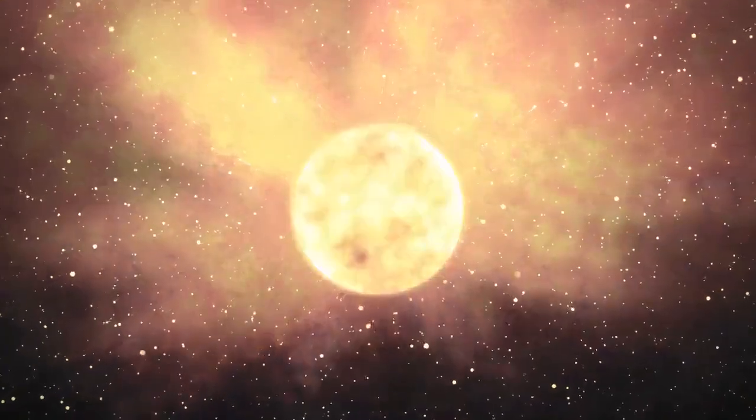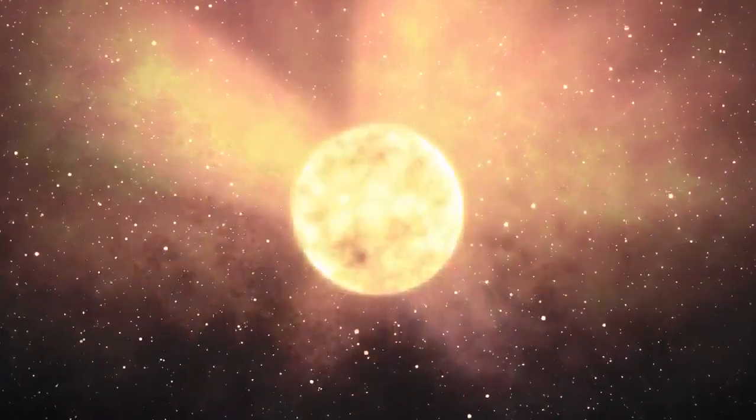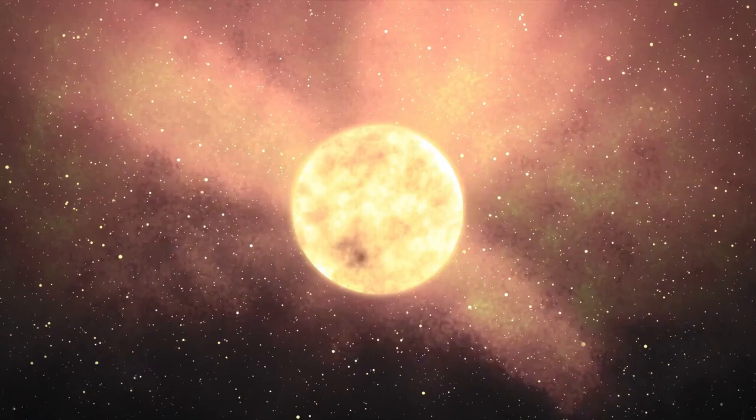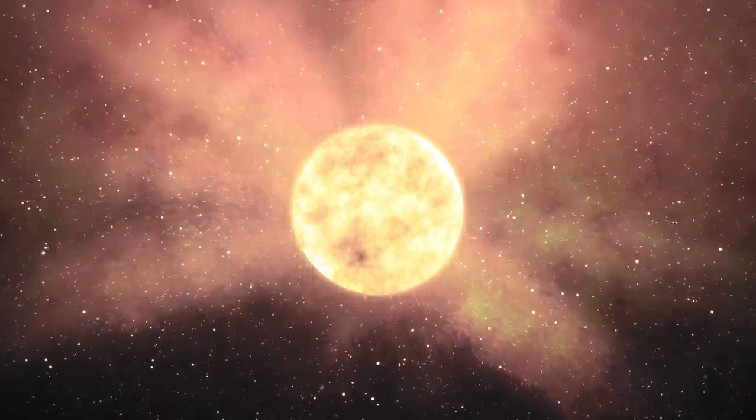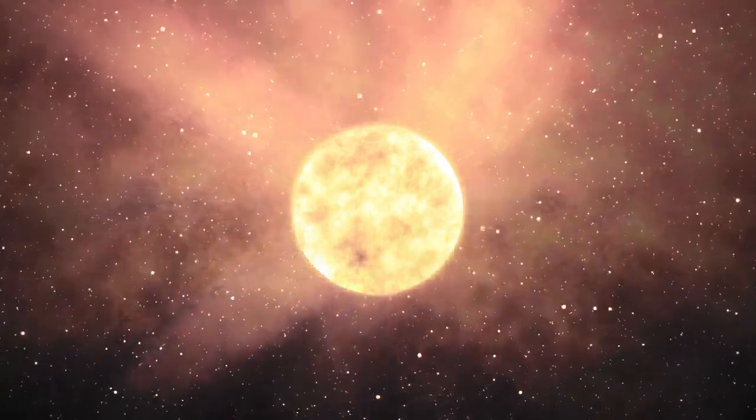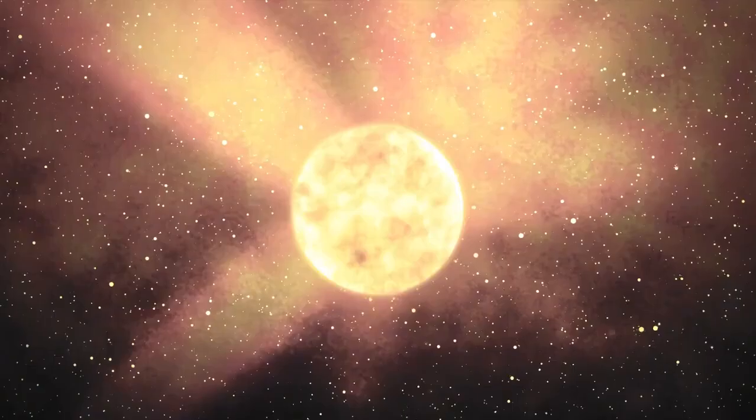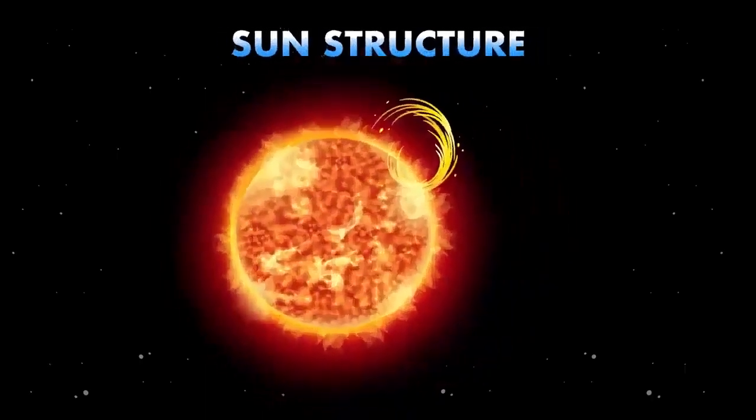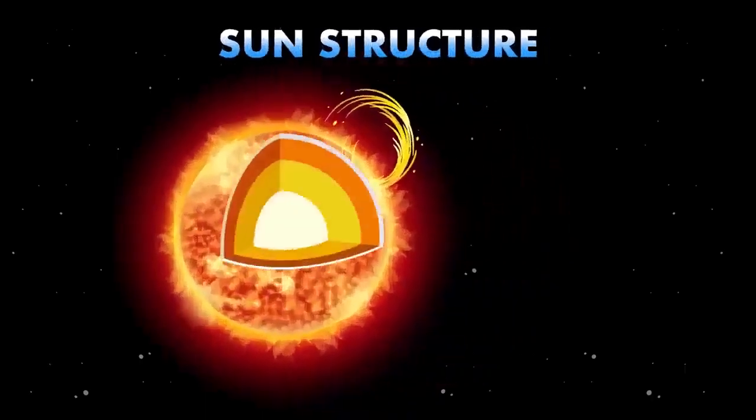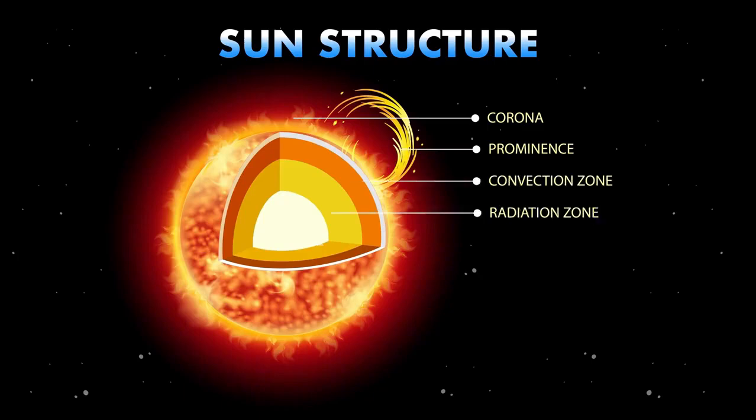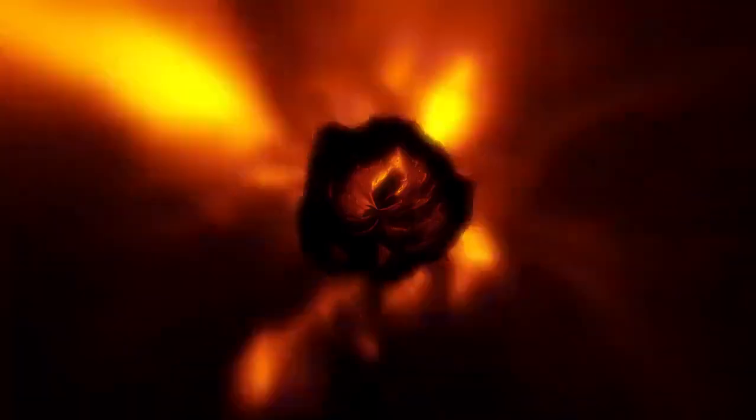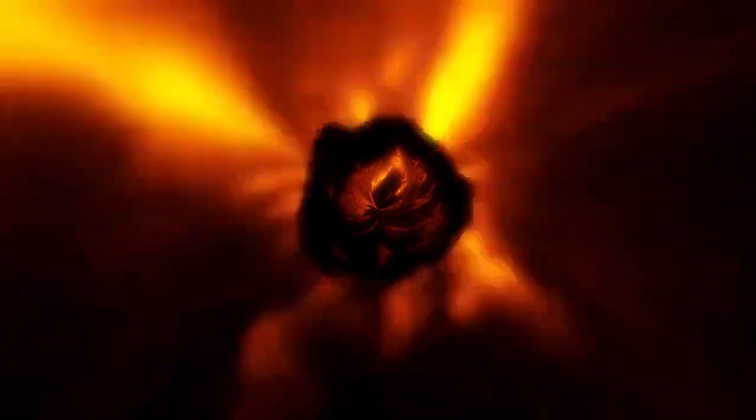As a red supergiant nearing the end of its life cycle, Betelgeuse is experiencing dramatic changes in its internal and external structure. The star is gradually exhausting its hydrogen fuel, a process with profound implications for its future. As hydrogen fusion slows in its core, the outer layers expand, causing the star to grow even larger. Simultaneously, helium accumulates around the core, triggering a secondary fusion process known as helium envelope burning.